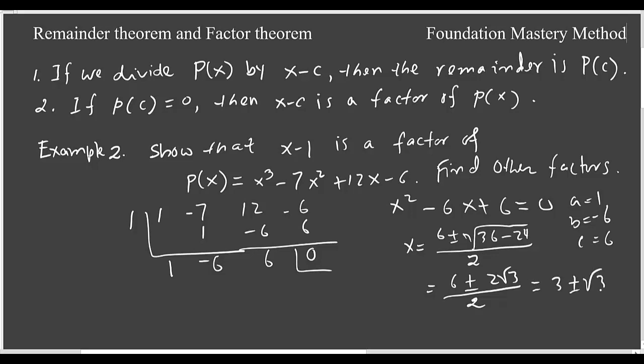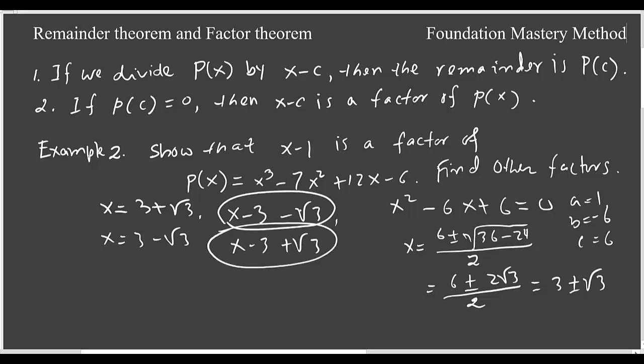So what are the factors now? We have x = 3 + √3 and x = 3 - √3. These are my zeros, so the factors will be (x - 3 - √3) and (x - 3 + √3). So we got the other two factors and we are done.